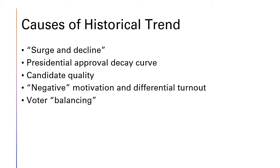One of these is the presidential approval decay curve. By the time midterm elections come around, presidents' approval ratings have generally suffered a fair amount of decline, and low presidential approval ratings tend to be correlated with losses for the president's party in the midterms. Also, candidate quality tends to look different in midterm election years. Members of Congress in the president's party often see the writing on the wall and choose to retire rather than engage in a difficult re-election fight. Meanwhile, the out party smells blood in the water and tends to recruit strong challengers who give the party its best chance of winning new seats.